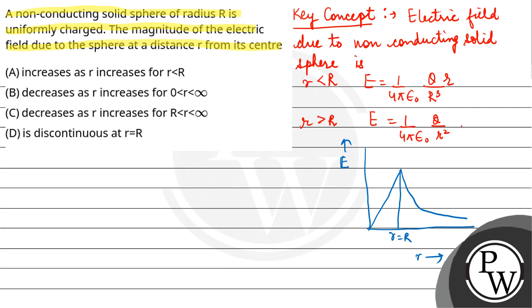Now see, the first option is that electric field increases as r increases for r less than R, means inside. For r less than R, electric field is directly proportional to r. So if r increases, then electric field increases. That means option A is correct.